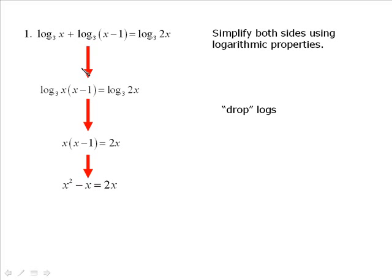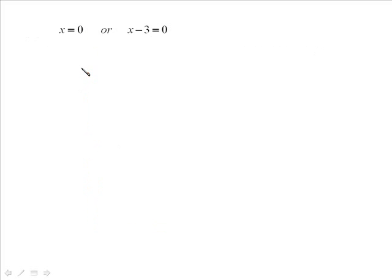To solve this one, x squared minus x is equal to 2x. We've got another quadratic, although it's just a two-term quadratic. So x squared minus 3x is 0. Factor out the x, and that gives you x bracket x minus 3 is 0. And then we get our two solutions, x is 0 or x minus 3 is equal to 0. And that would mean x is 0 or x is 3.